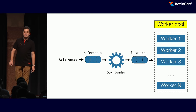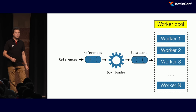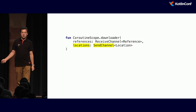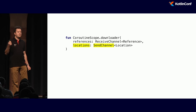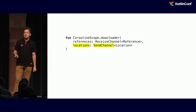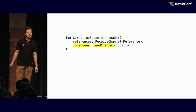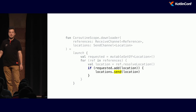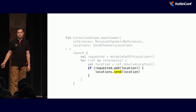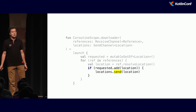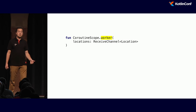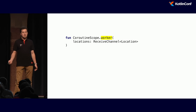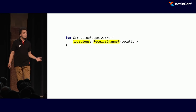Let's implement it. The downloader code used to have only one parameter — the references channel. Now it has a second one, locations. We add it as an additional parameter. Now the downloader receives from references but sends locations — so locations is a `SendChannel`. Now when it's the first time we see this location, we just send it over the locations channel to our worker pool. Now we need to set up this worker pool. Using the same pattern: define a function as an extension on `CoroutineScope`. Because the worker receives locations, we define a parameter as `ReceiveChannel`.